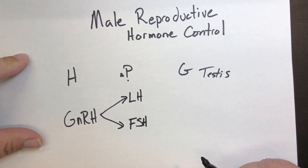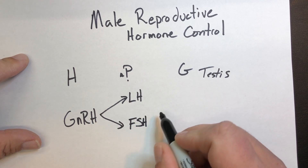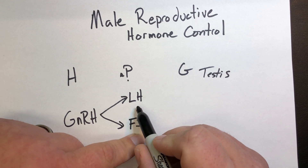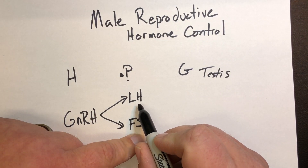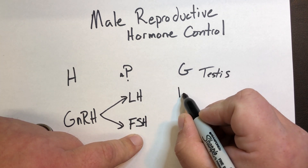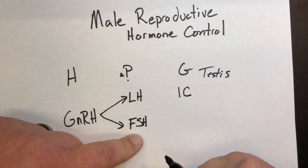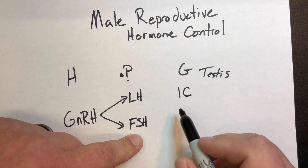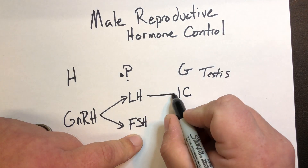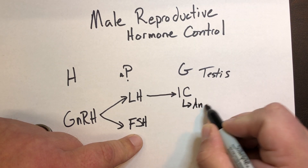Remember, in the males, the names of those two hormones are less important than knowing the abbreviations. These are the gonadotropins, LH and FSH. Their generic target is the testis, but more specifically, LH targets the interstitial cells — abbreviated IC. Interstitial means 'in between.' When targeted by LH, the interstitial cells produce androgen.